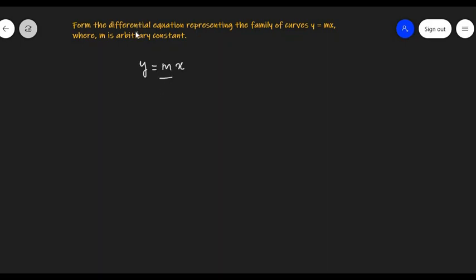In order to get the differential equation, we need to eliminate this arbitrary constant. So we do this by differentiating, and since we have only one arbitrary constant, the order of the differential equation will be 1.